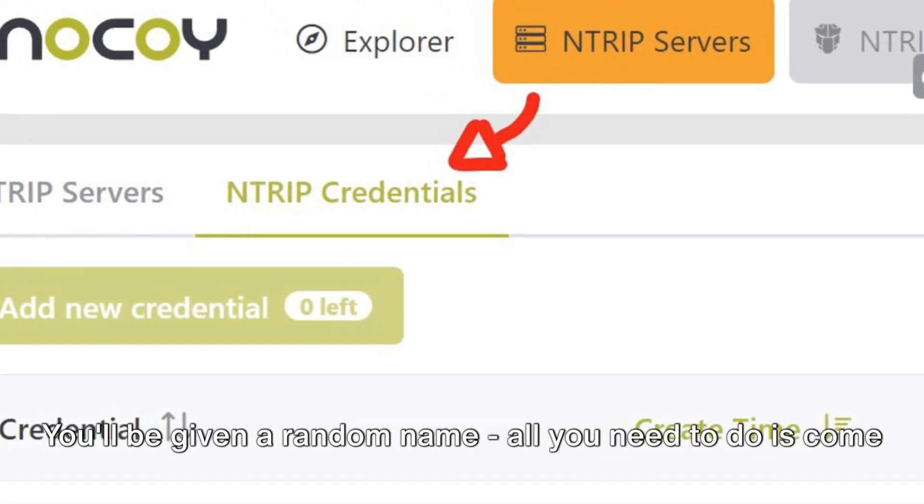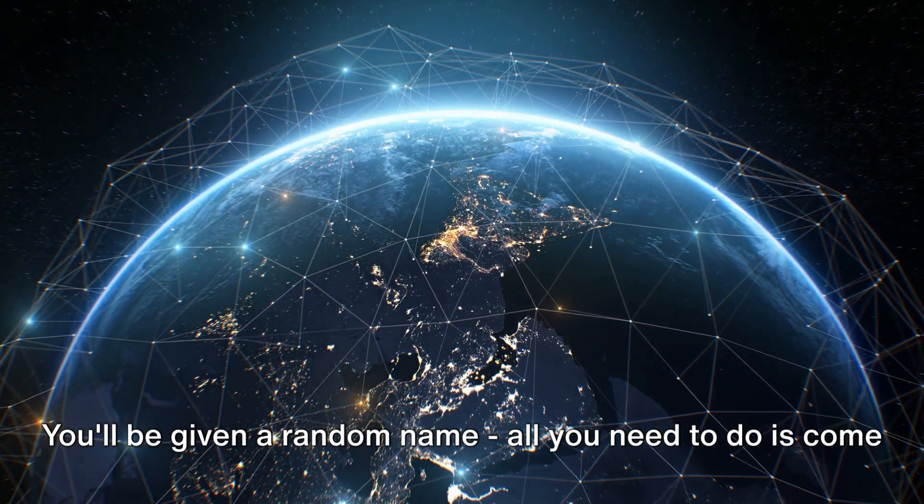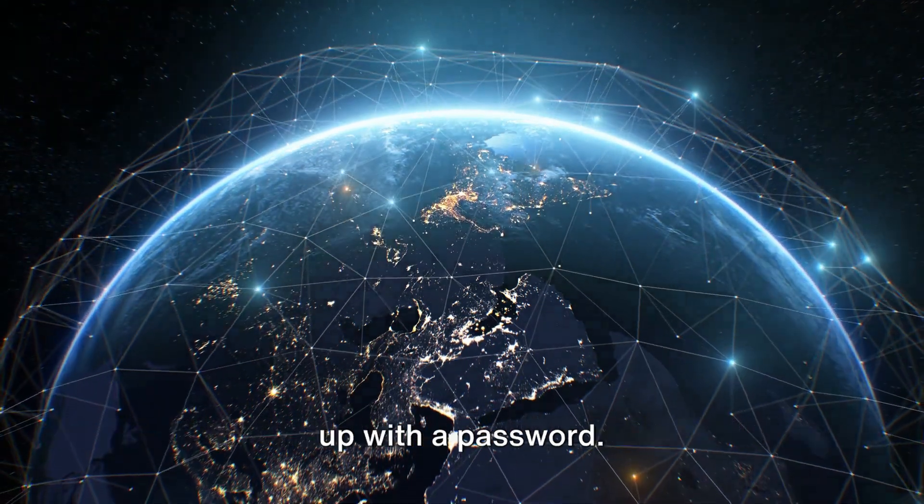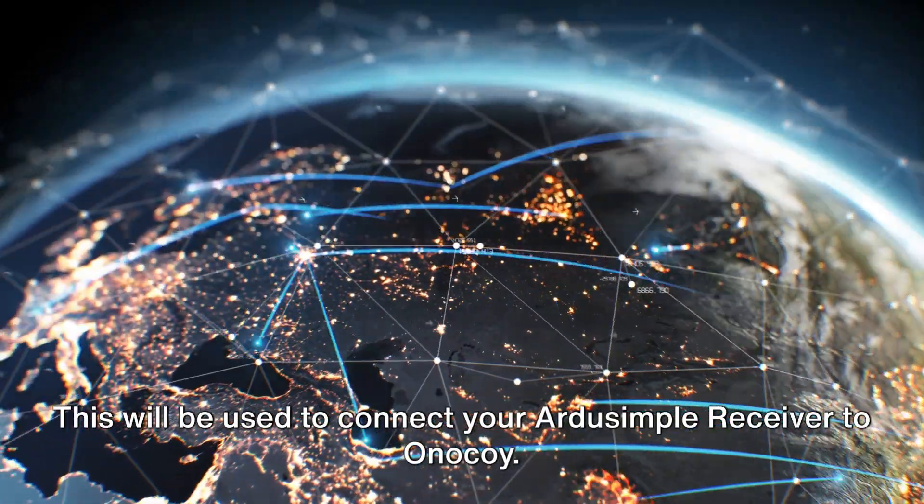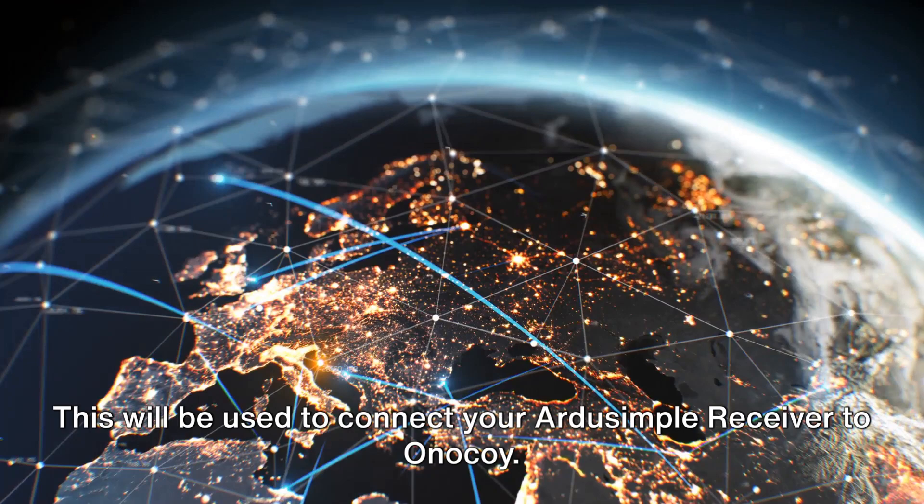It's time to create your Entrip credential. You'll be given a random name. All you need to do is come up with a password. This will be used to connect your ArduSimple receiver to Onokoi.